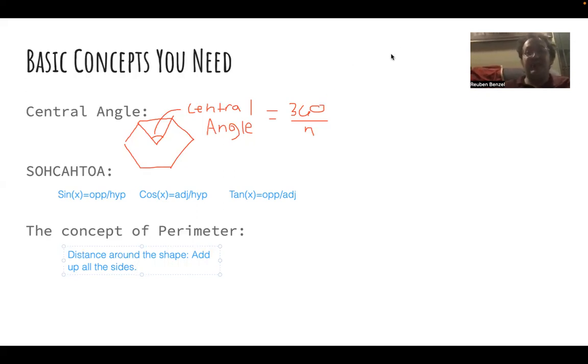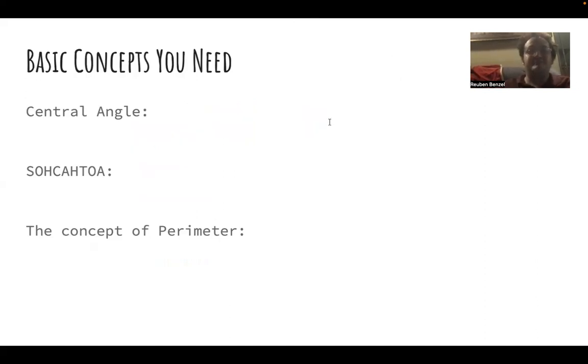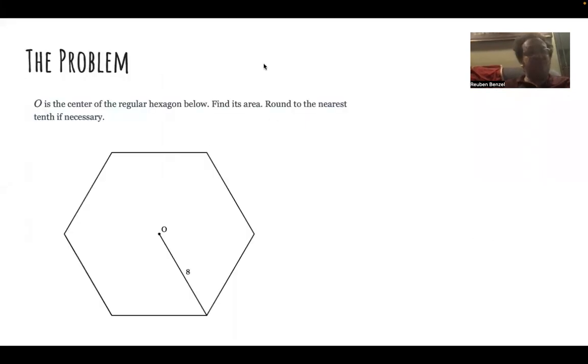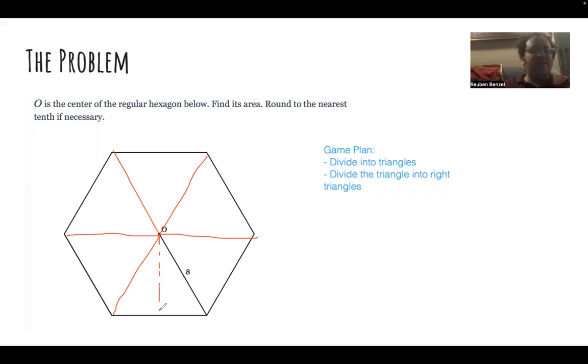So let's actually take a look at an area of a hexagon problem now. So game plan, what we're going to do is we're going to divide into triangles. Divide the triangle into right triangles. So I'm just going to demonstrate that right now.